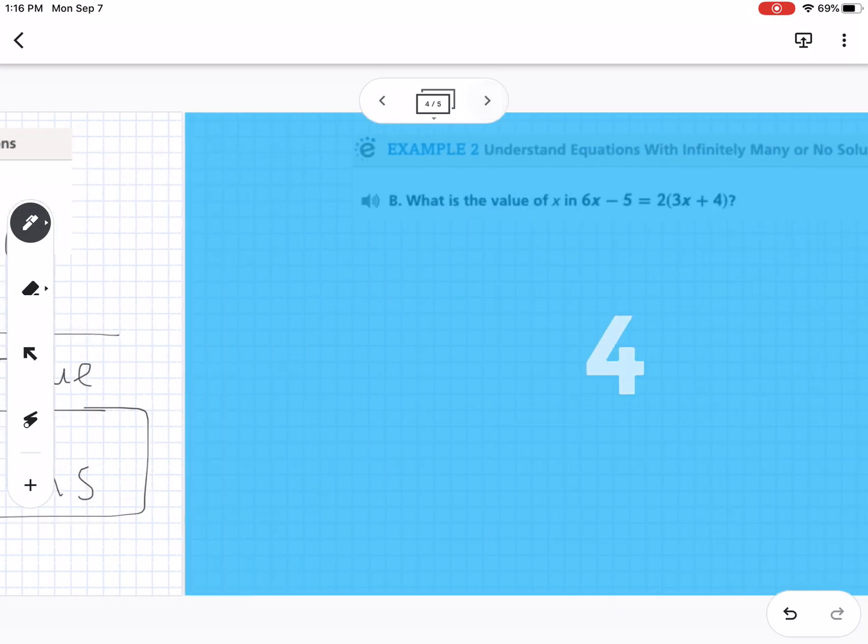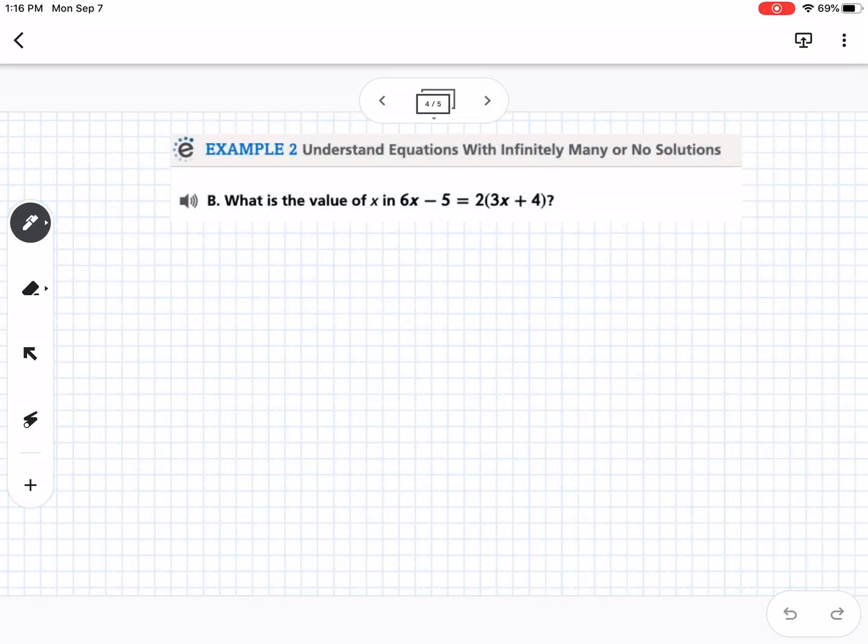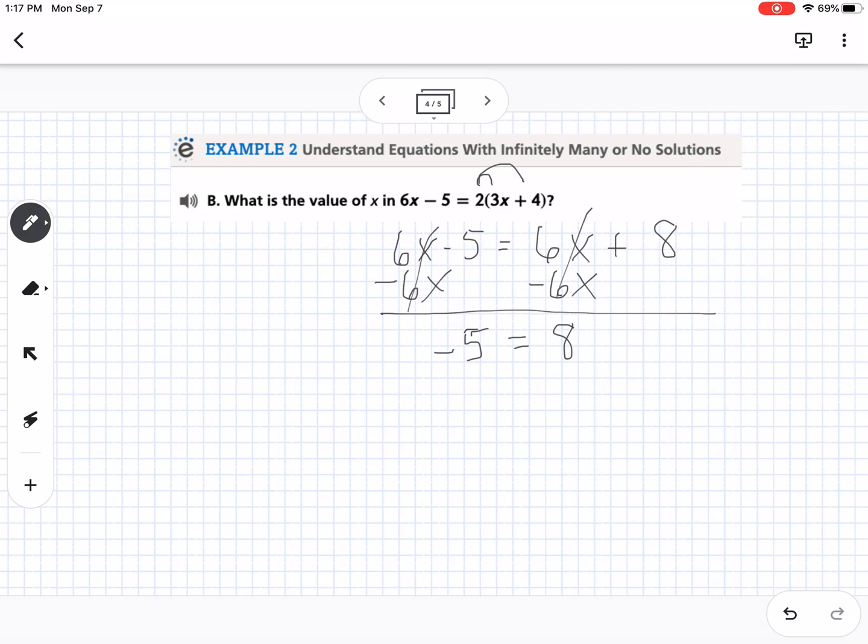So the second part of example two is this one. So again, we're going to start by distributing. So this side stays 6x minus 5. This one is 6x plus 8. So on this one, you will notice that they both have 6x's on either side, but the numbers are different. So if we start by subtracting 6x, like we normally would, then those cancel, and I'm left with negative 5 equals 8. We know that that is false. Negative 5 does not equal 8, so therefore, this is a no solution.